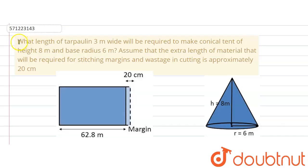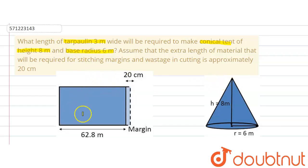The given question says: what length of tarpaulin 3 meter wide will be required to make a conical tent of height 8 meter and base radius 6 meters? We are asked to find the length of a tarpaulin cloth whose breadth or width is given as 3 meters, to make a conical tent of the given dimensions.